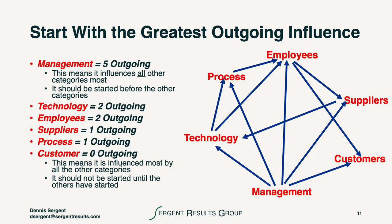So we start with the greatest outgoing influence and we continue through. Management with five outgoing influences influences all the other categories the most, and it should be started before the other categories. The customer affinity should be started last after the others have started. It doesn't mean when they get finished — it just means when we start.